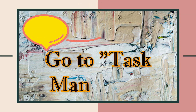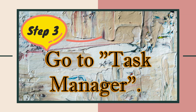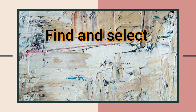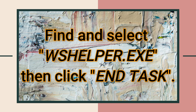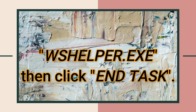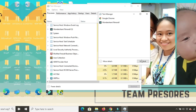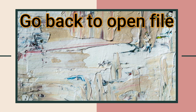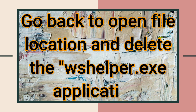Step 3. Go to Task Manager. Find and select WS Helper.exe, then click End Task. Go back to Open File Location and delete the WS Helper.exe application.